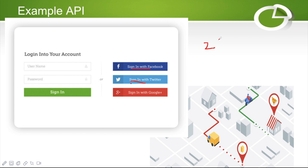You just need to use their functions in a particular manner to get the data. This helps you build your application very quickly. You don't need to manage user information, you don't need to store all the user data in your instance, and Facebook uses standard security that you don't need to provide yourself. So there are many benefits to using APIs.